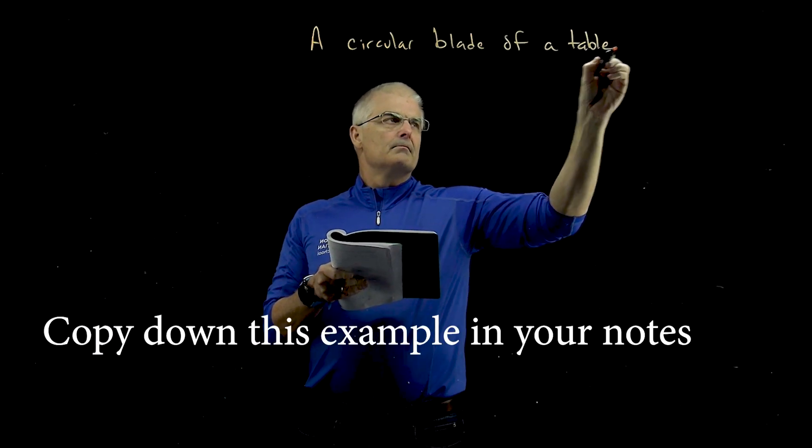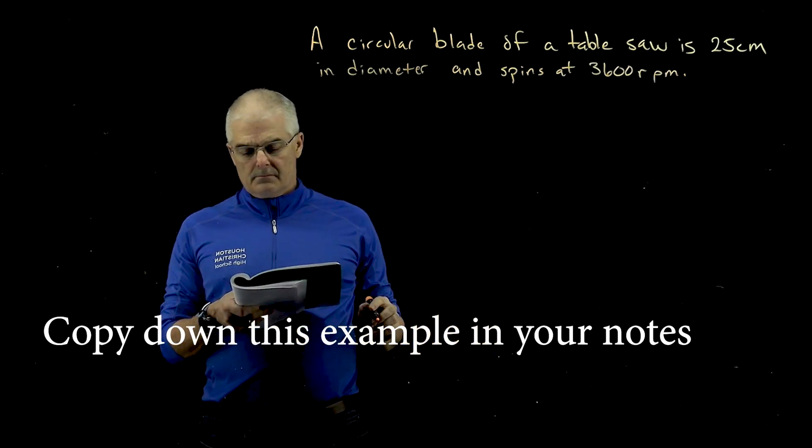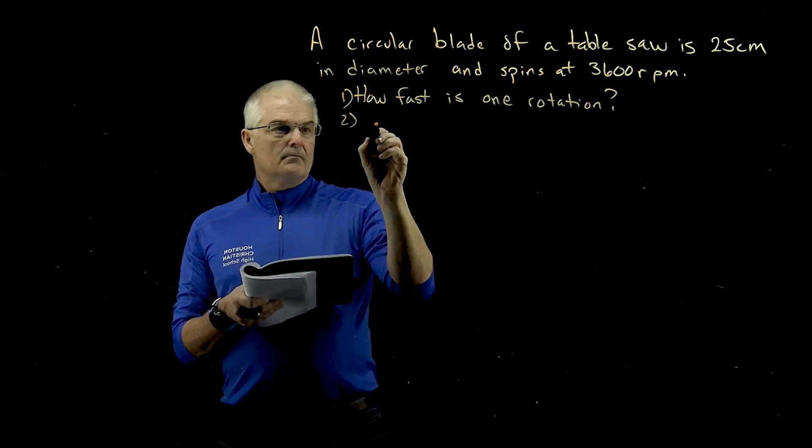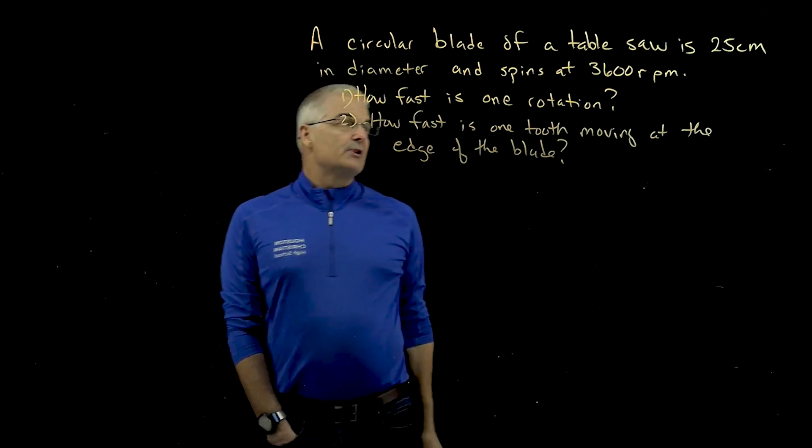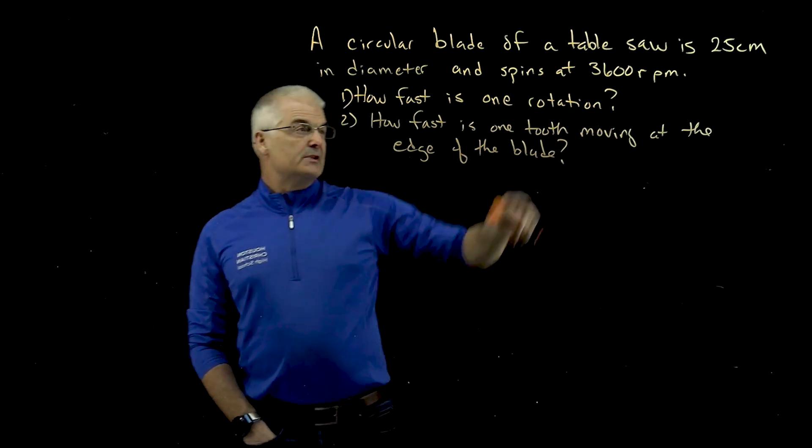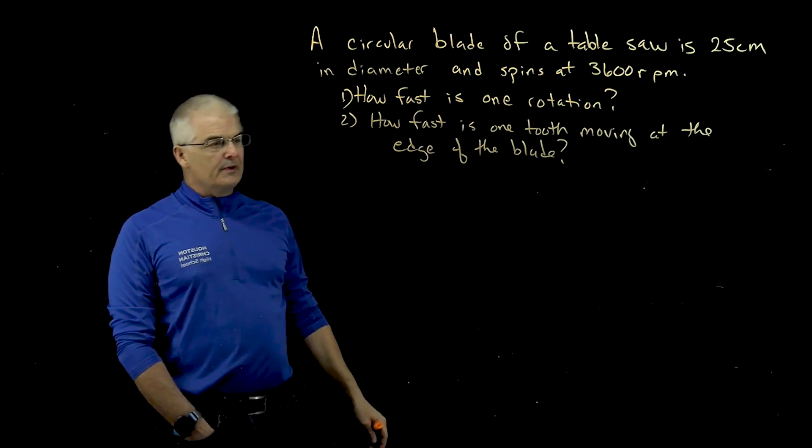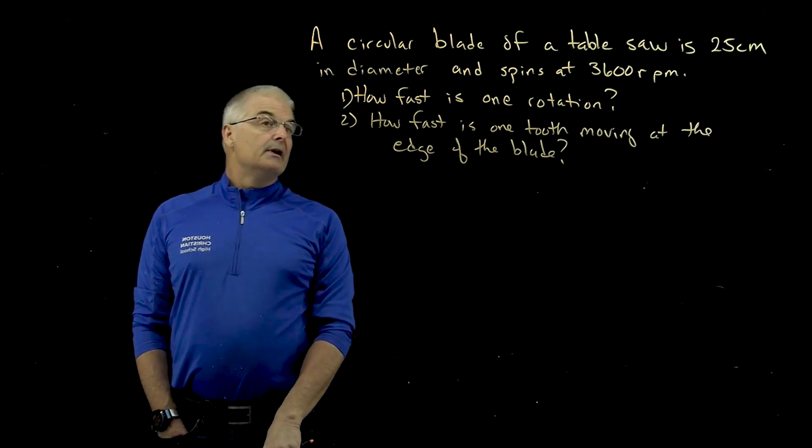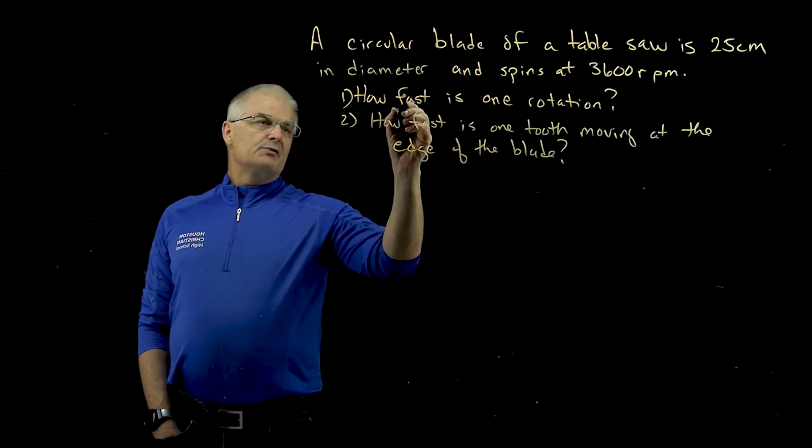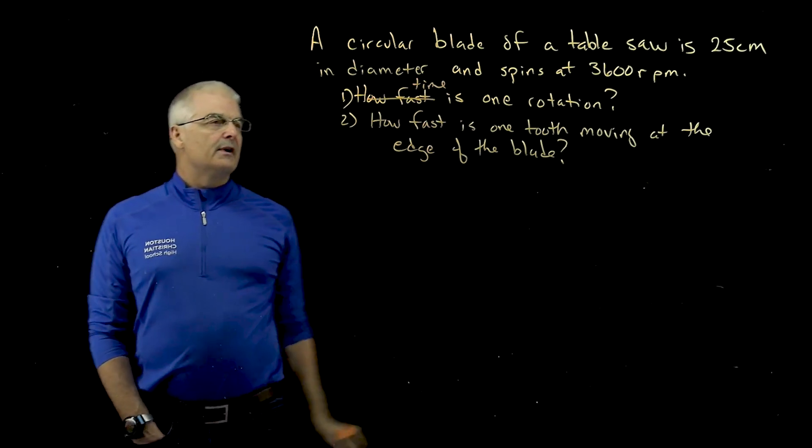Now let's do one quick problem. The circular blade of a table saw is 25 centimeters in diameter and spins at 3,600 RPMs. How fast is one rotation and how fast is one tooth moving at the edge of a saw blade? Not how fast, this would be how much time.